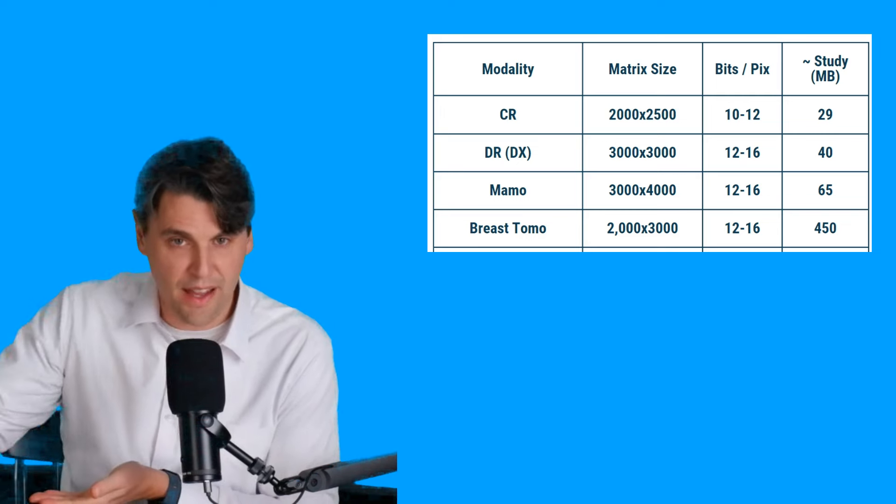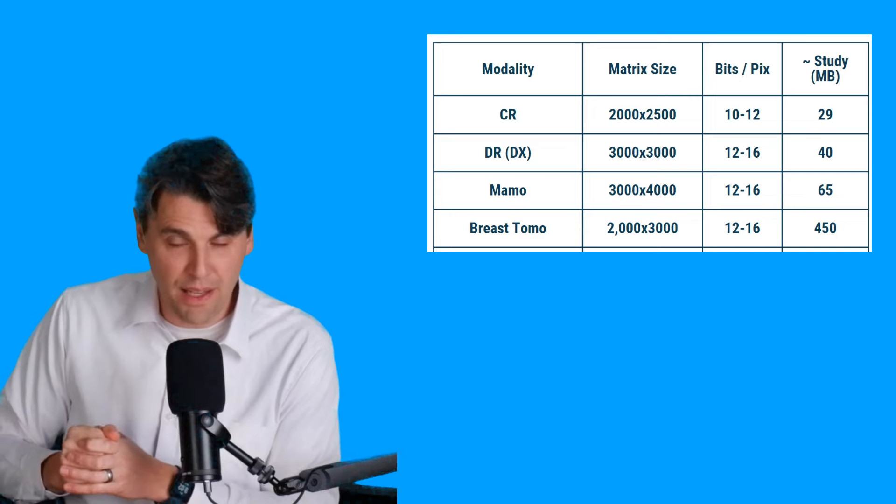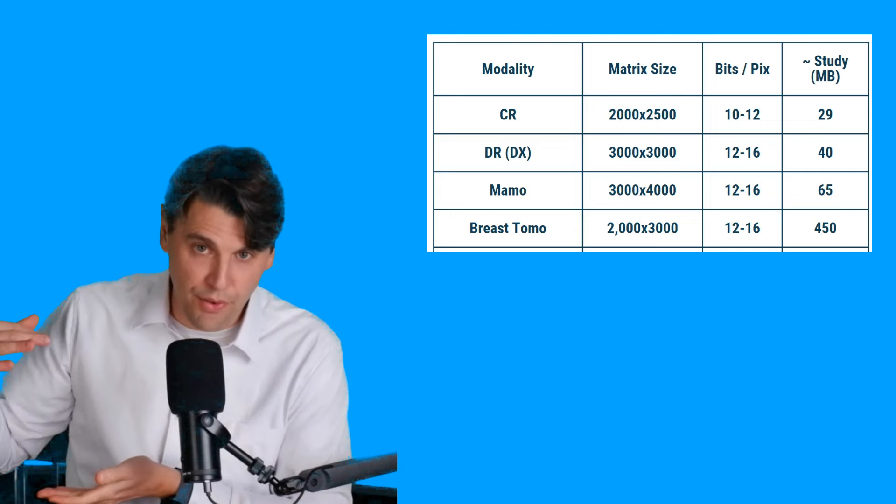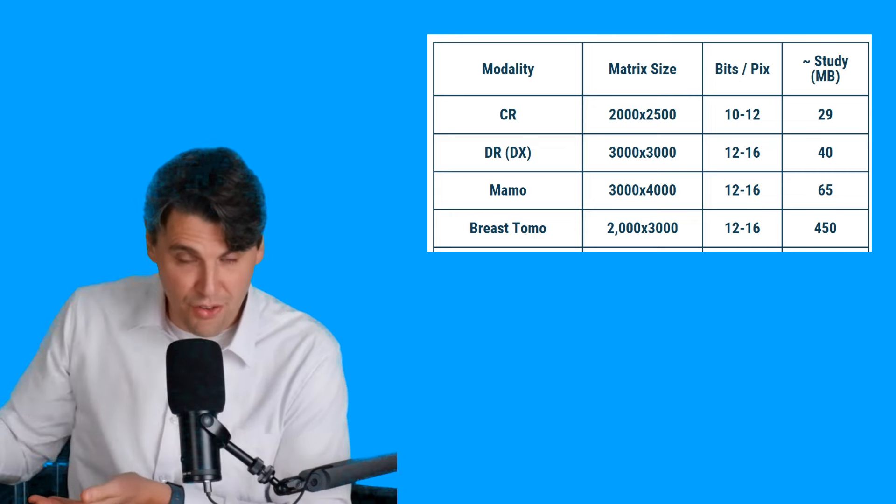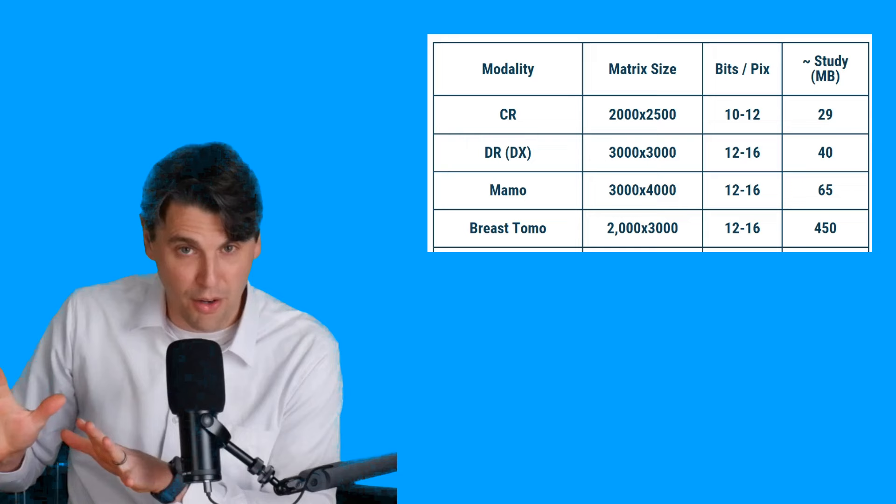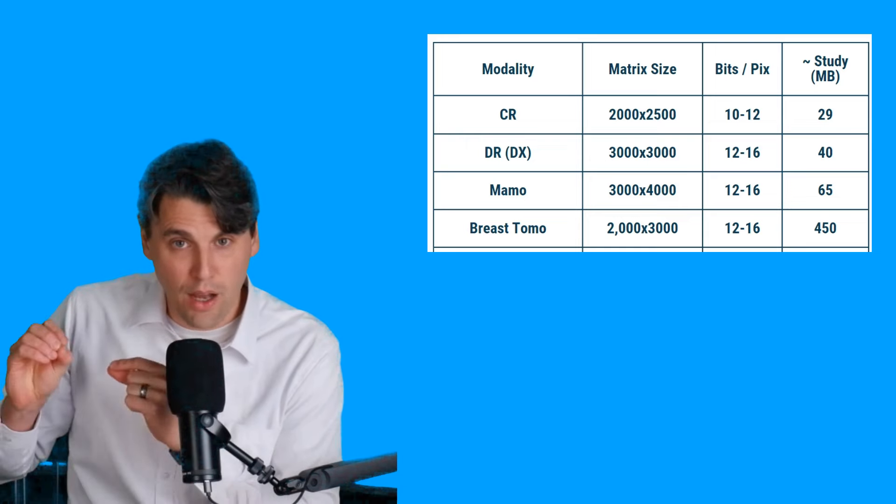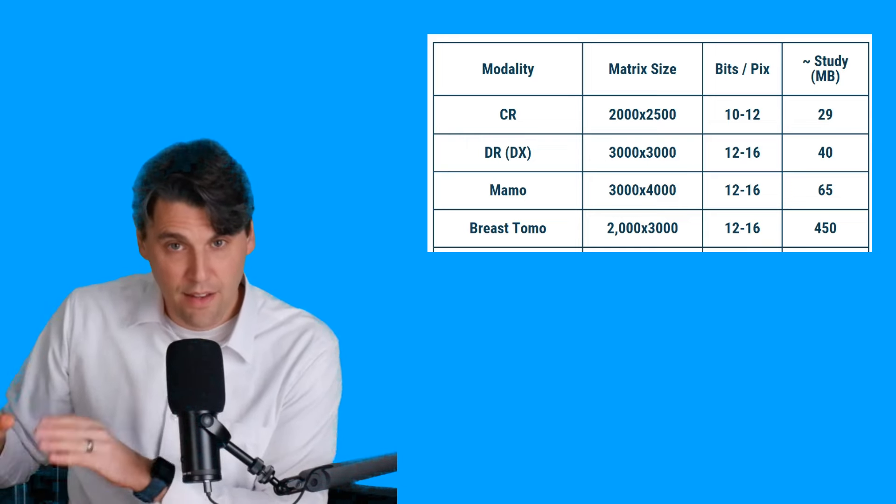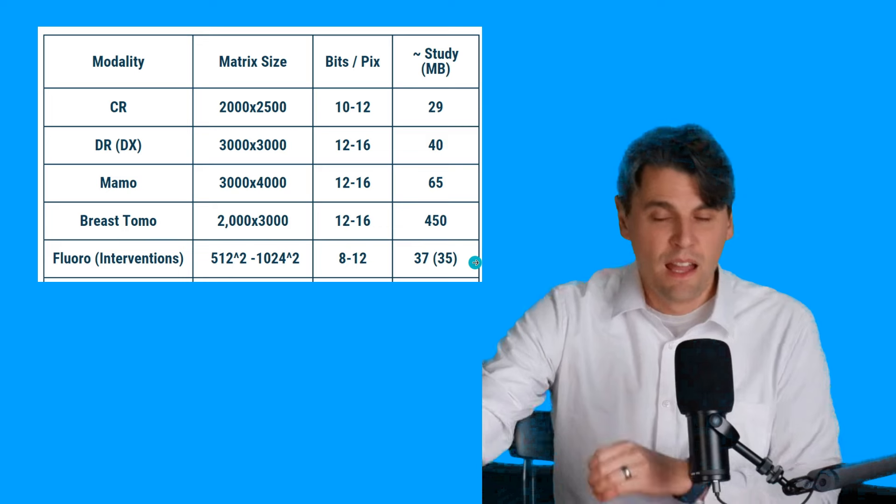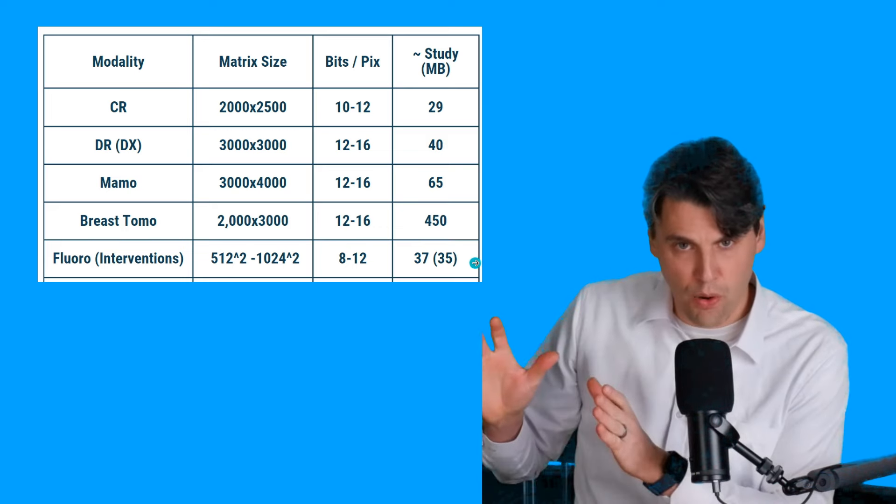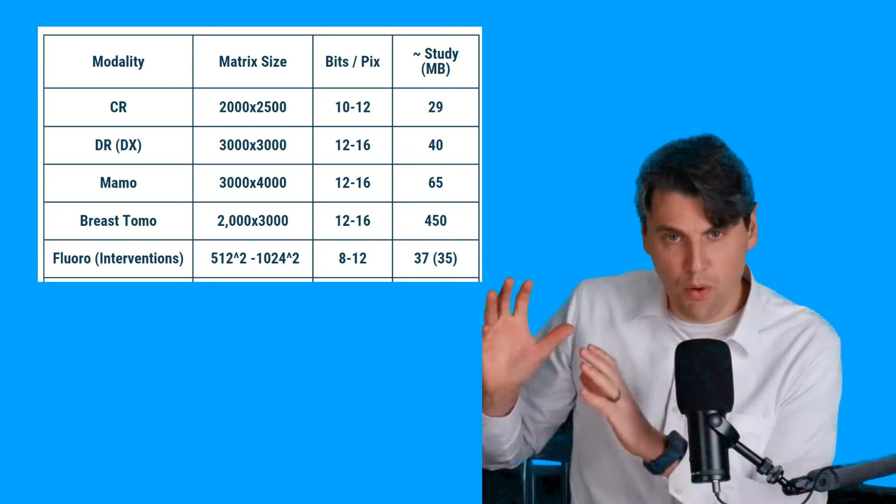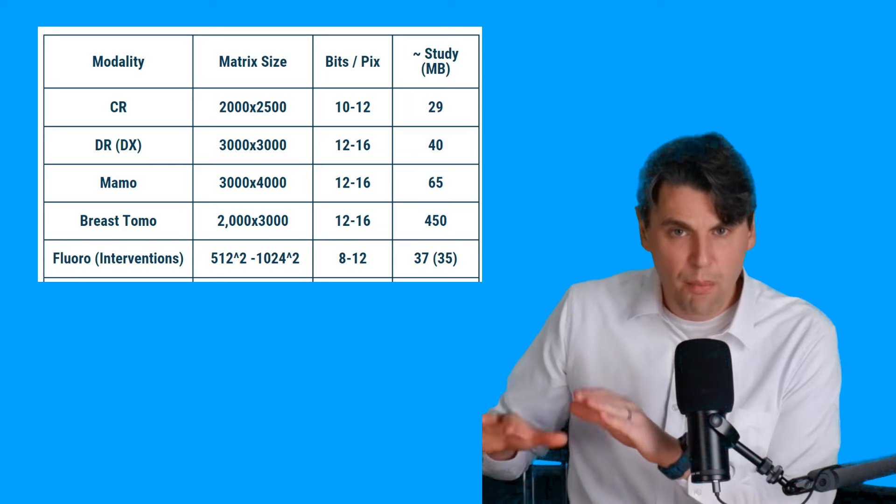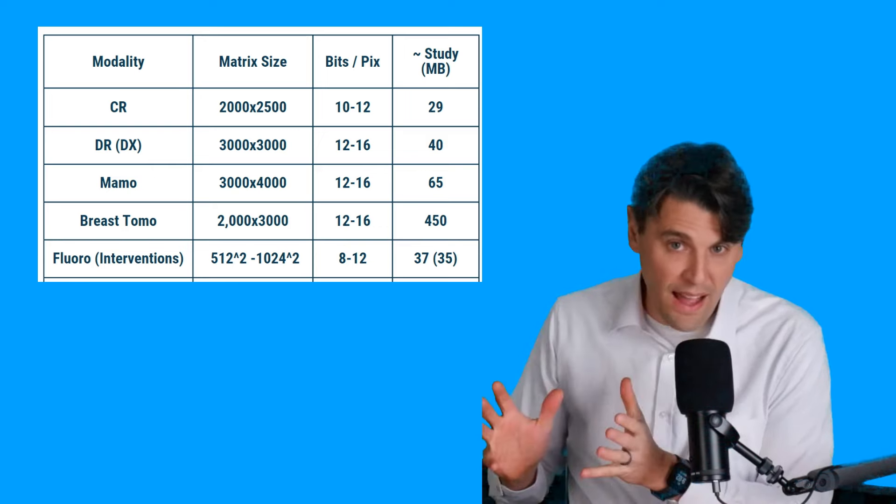Then there's a big jump on breast tomosynthesis because in this scenario, both the raw projections and the tomographic images are being saved. Because there's multiple views and we're doing this tomosynthesis. Check out our video on tomosynthesis if you want to know more about how that works. It leads to a relatively large size of about 400 megabytes. Then on the smaller end again is the fluoro. Either the digital fluoro or the interventional fluoro. Both are typically around the 30 megabytes.